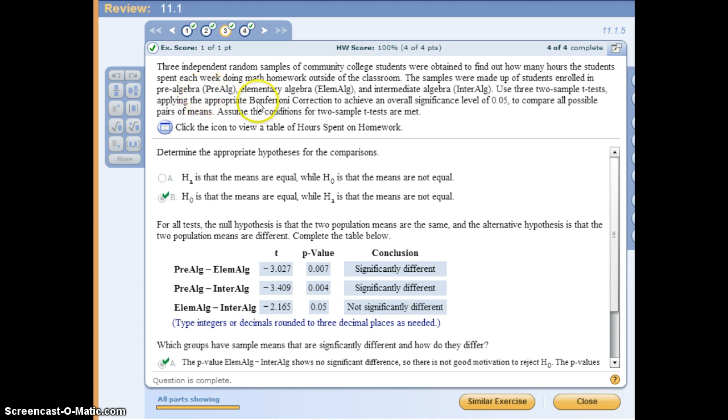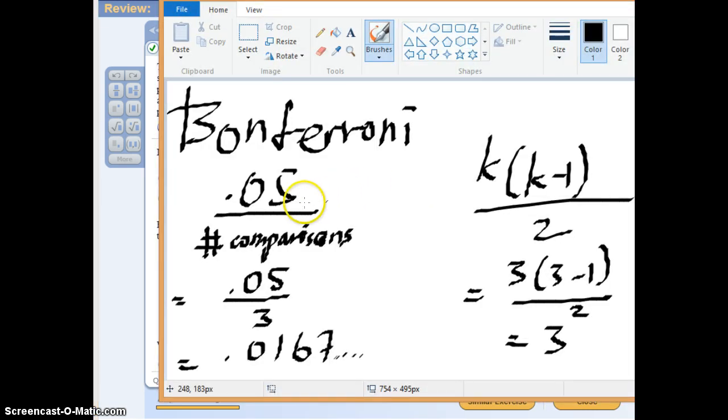But here, there's a special rule because they're applying the Bonferroni correction. For this correction, we need to do something for the significance level. We know that the significance level is usually 0.05, but in Bonferroni, we need to use 0.05 over the number of comparisons.